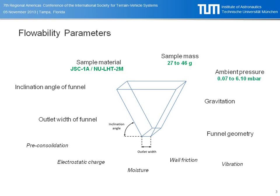Regarding the ambient pressure, we didn't reach a vacuum comparable to the Moon — we have ultra-high vacuum on the Moon — but we were able to obtain pressures in the range of 10 to the minus 2 to several millibars. We tested the hopper flow under terrestrial conditions at 1G, and then also under Mars G and lunar G.